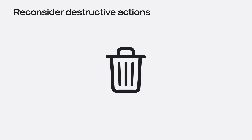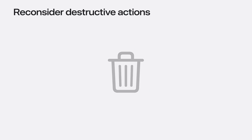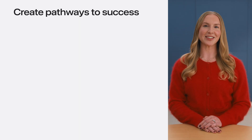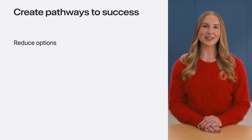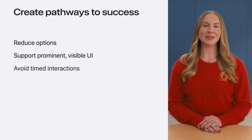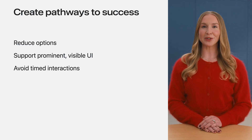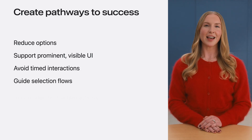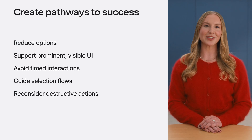There are some important actions that may be difficult to recover from, like deleting a photo. Consider removing this functionality entirely. Or if you do plan to implement more permanent actions like deletion, ask twice for confirmation where appropriate. The goal is to make sure people don't end up in a situation they didn't intend. You've learned best practices such as reducing content and presented options, supporting prominent UI, avoiding timed interactions, building incremental guided flows, and reconsidering how and where destructive actions are implemented.